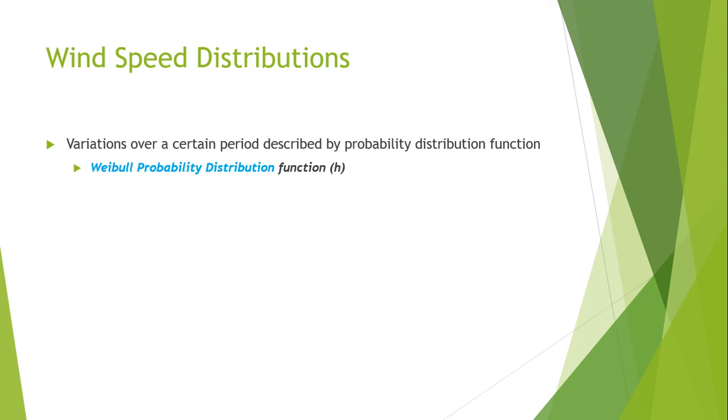Now I will discuss wind speed distributions. The variations over a certain period are described by the probability distribution function, and that probability distribution function is known as Weibull probability distribution function and is denoted by h. The Weibull probability distribution function has two parameters which are the shape factor k and the scale factor c.